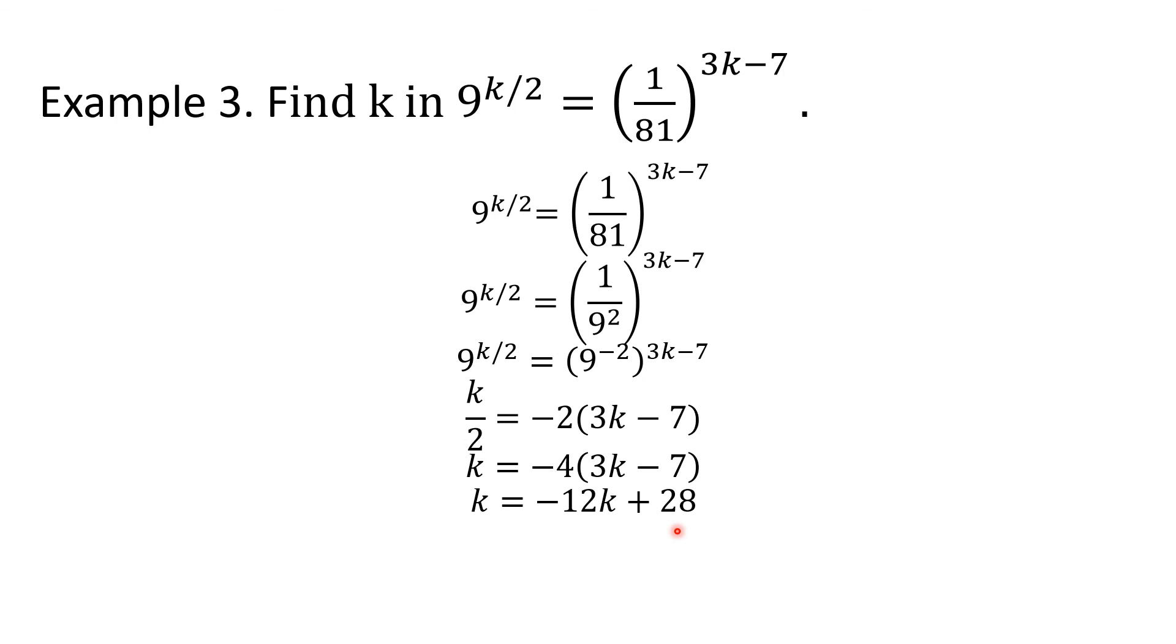By APE, by adding positive 12k to both sides, we'll get 13k equals 28. And then by MPE, by dividing both sides by 13, we'll get k equals 28 over 13. So this is the value of this k.